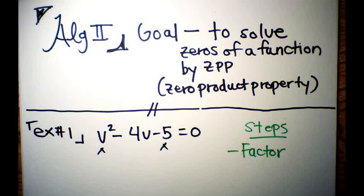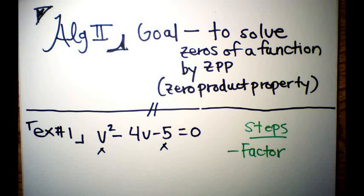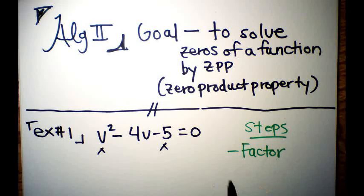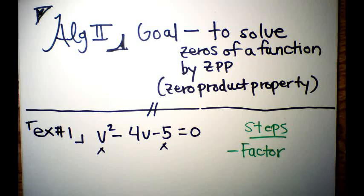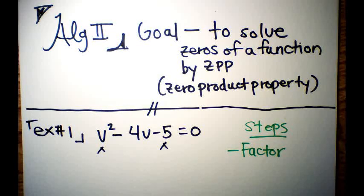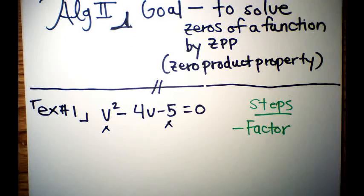A function can be thought of as an equation or a graph. We'll just use an equation for now. With ZPP we're going to have four examples today, and we are having numerical answers at the end — like five-thirds or negative one. Let's jump to example number one.